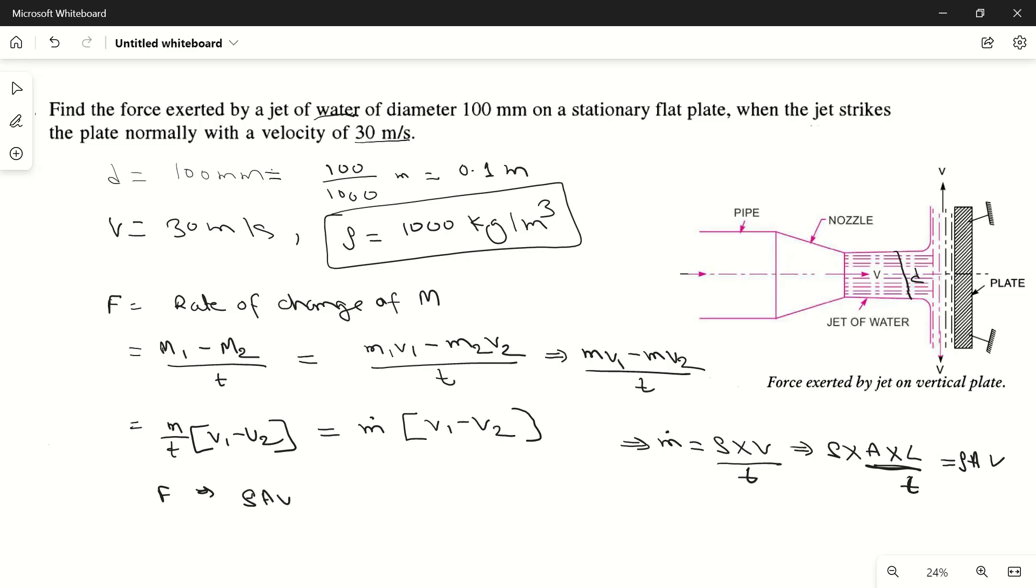So F will become rho A V into v1 minus v2. Now we are finding the force, plate is symmetrical so vertical force will be zero, but what will be the horizontal force?